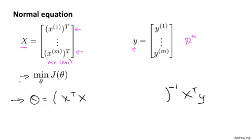Now that we are using the regularization, if you were to derive what the minimum is, and just to give you a sense of how to derive the minimum. The way you derive it is you take partial derivatives with respect to each parameter, set this to zero, and then do a bunch of math.